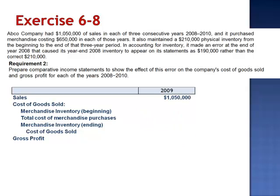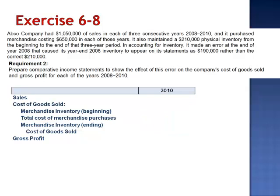In 2009, sales of $1,050,000 minus cost of goods sold — but our beginning inventory balance is understated by $20,000. Rather than the correct $210,000, we show $190,000 as our beginning inventory balance. Adding $650,000 in purchases brings us to a subtotal of $840,000. At the end of 2009, the inventory balance is correctly stated at $210,000. So $840,000 minus $210,000 equals $630,000 cost of goods sold, which is understated. Since our expense is too low by $20,000, our gross profit is overstated by $20,000.